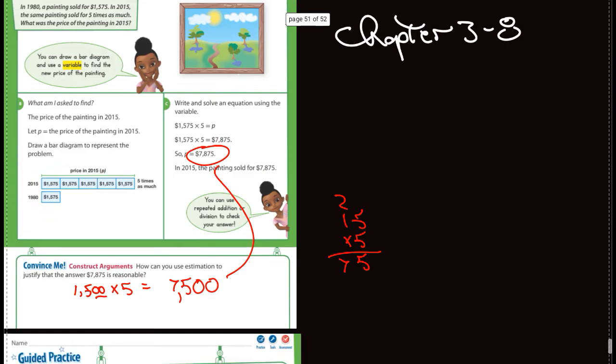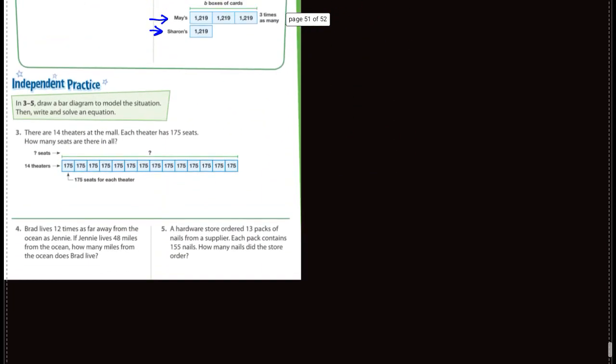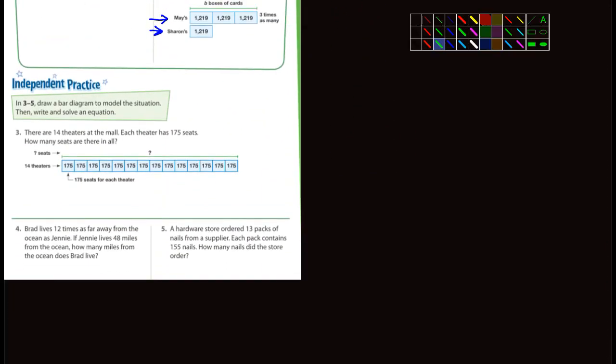That was number two. Number three, let's move down a little bit here to the independent practice. There are 14 theaters at the mall. Each theater has 175 seats. How many seats are there in all? Well, I think you guys could do that. We're talking about 175 times 14.